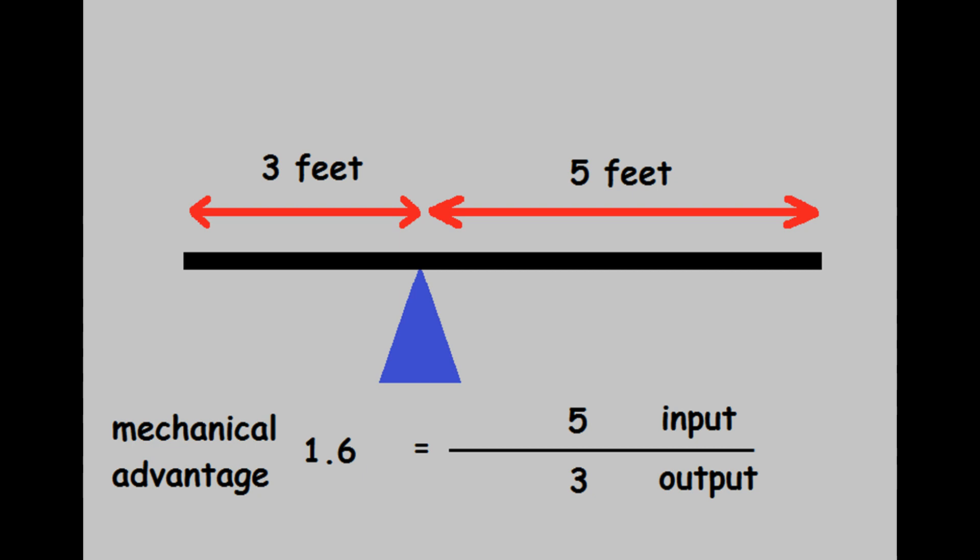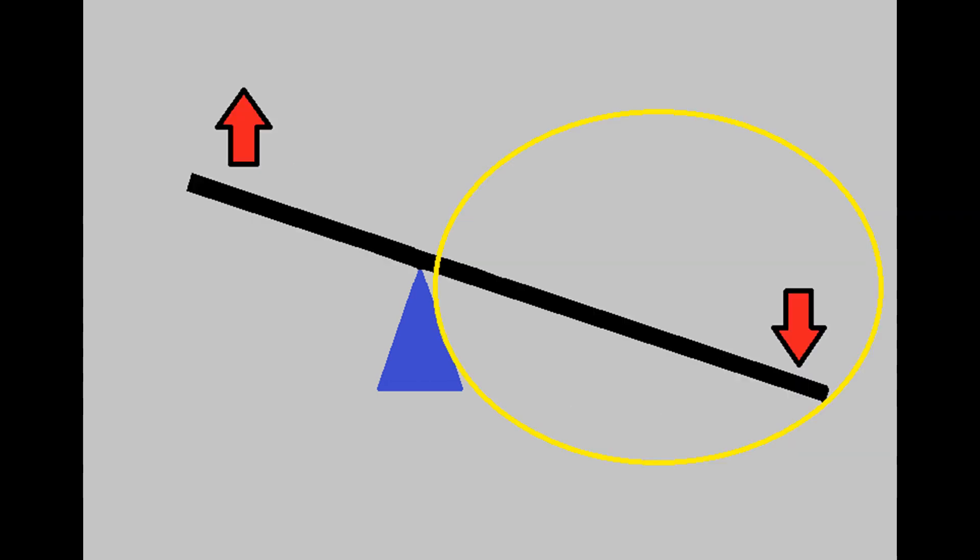Stated another way, a 10-pound input can lift 16 pounds. In case you're wondering what makes this happen, the input arm is moving considerably further than the output arm. So in reality, a lever neither decreases or increases the amount of total effort necessary to move a load. Instead, what it does is make the work easier by spreading out the effort over a longer distance.